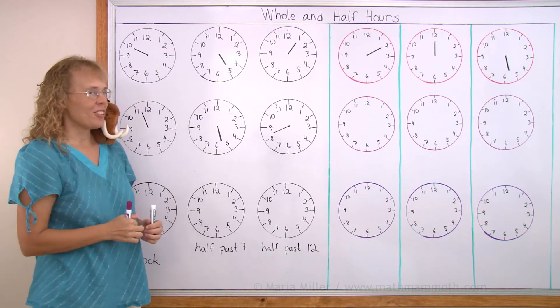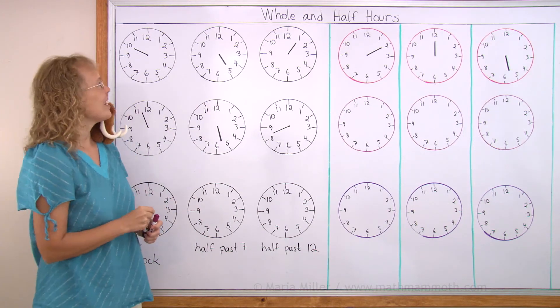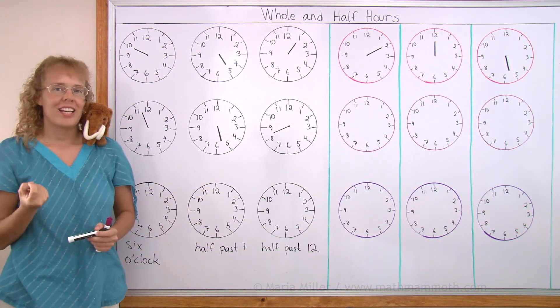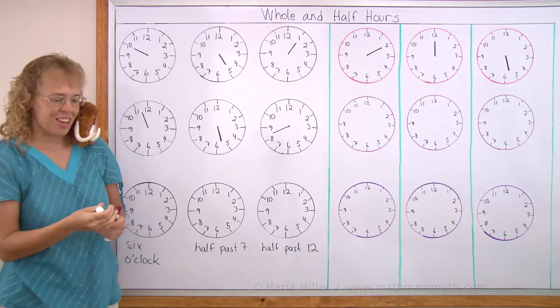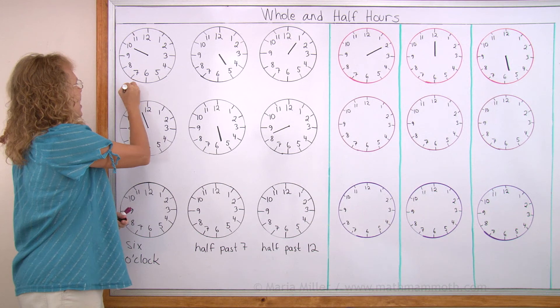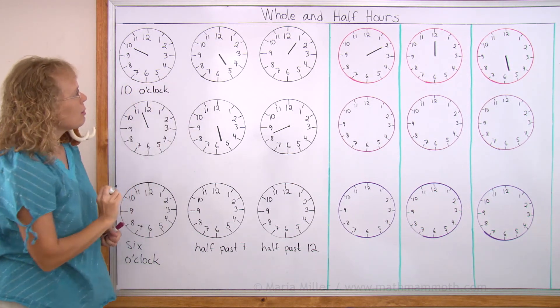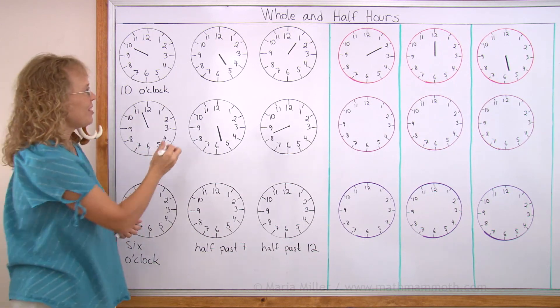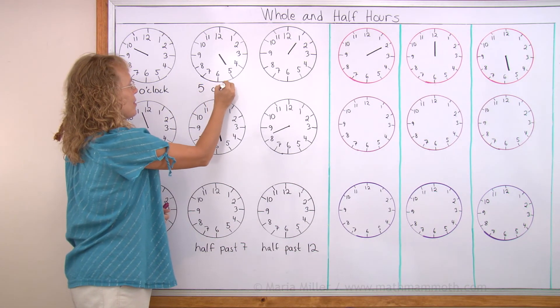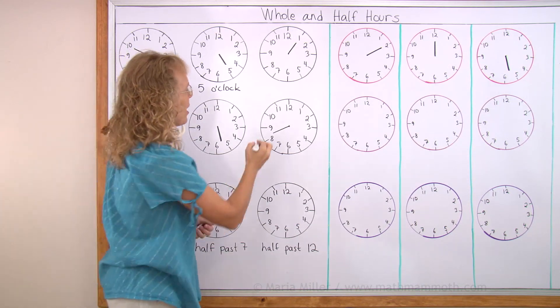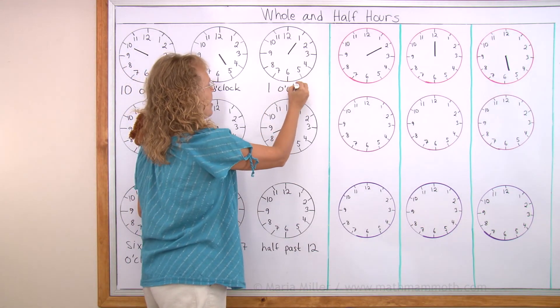Here I have clocks that only have the hour hand again. So what time is it here? The hour hand is pointing to 10, so it is 10 o'clock. Let's write it here, 10 o'clock. Over here what time is it? 5 o'clock, yeah. This is pretty easy, how about over there? 1 o'clock.